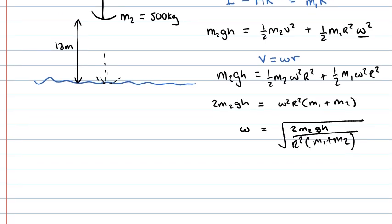And now all we have to do is fill in the numbers that we know. So our mass M2 is 500 kilograms. Gravitational acceleration is 9.8.